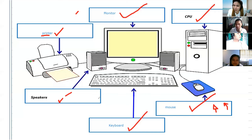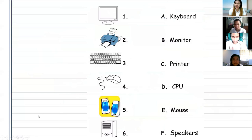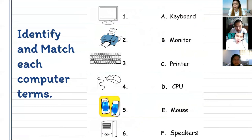Can you give a thumbs up for everyone? Thank you for your thumbs up. So next, let's proceed. Now I want you to identify and match each computer term. For number 1 and 2, Alfrancis; 3 and 4, for Enzo; and 5 and 6, for Aika. I just want you to identify the picture and its name, using your annotation, and match each column.